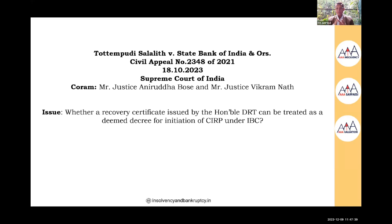There are three categories for tenancy: first, tenancy created much before the mortgage — those are protected even if the agreement is not properly registered, provided there is sufficient evidence of possession by the tenant before the mortgage. Second, tenancy created after the mortgage is subject to examination of the genuineness of the tenancy relationship, actual use of the property based on inspections. Third, tenancy created after a Section 13(4) notice is issued — those are completely invalid.